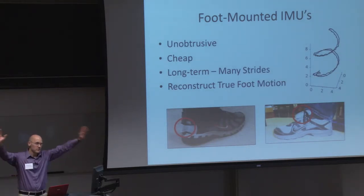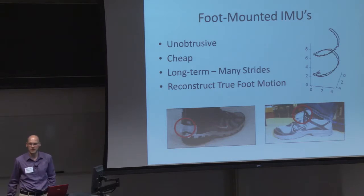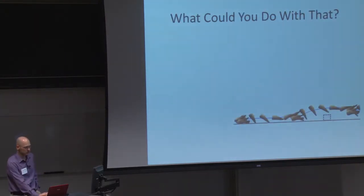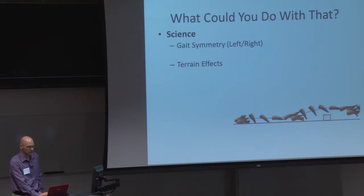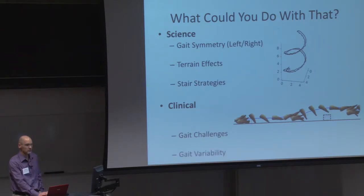So, my poster and the hardware demo and everything is about using foot mounted IMUs. What you can do with them. Come talk to me about it. How to use unobtrusive, cheap, long term measuring using IMUs to reconstruct foot motion. And the rest of the talk is just some examples about how this might work. Okay? So, what could you do with that? You could do science, such as measuring gait symmetry of left and right sides. You could measure the effects of terrain on the body. You could measure what people are doing when they're going up and down stairs, if you think they use different strategies. You could measure clinical things, like gait challenges that you might present to a patient, or variability in general, or foot clearance, like the boxes that I did not successfully hide there.